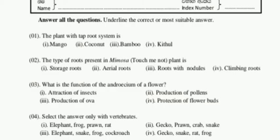All organisms in the correct answer must be vertebrates. In option three: elephant — vertebrate, snake — vertebrate, frog — vertebrate, but cockroach is an invertebrate, so we remove option three. In option four: gecko — vertebrate, snake — vertebrate, red — vertebrate, frog — vertebrate. Therefore the fourth answer is suitable for question four.